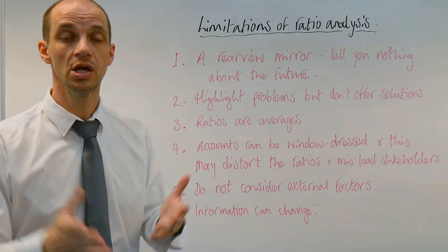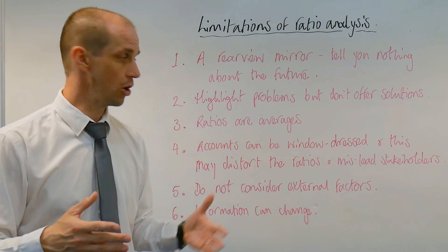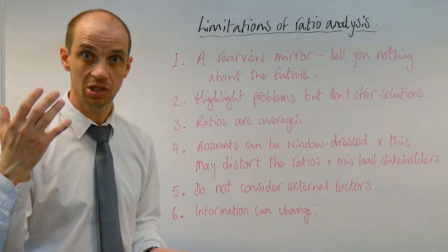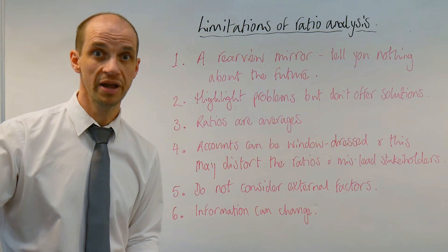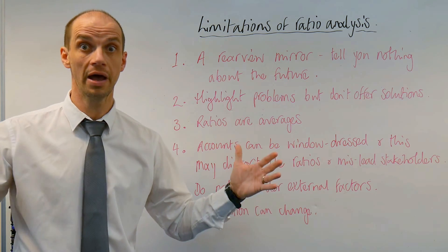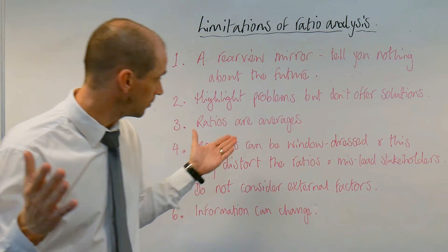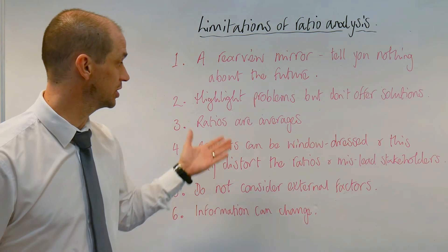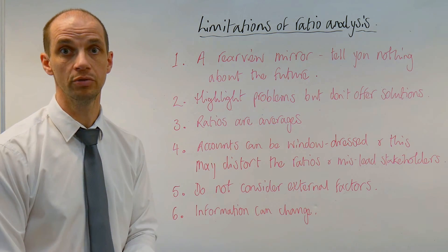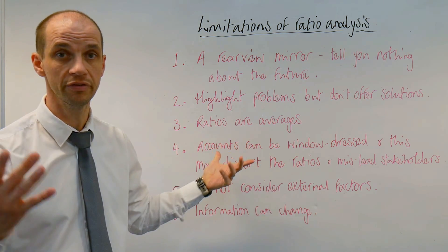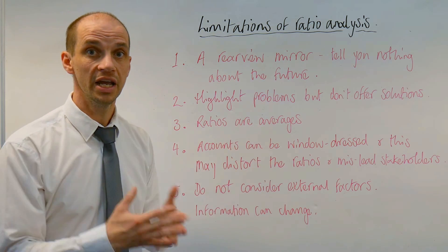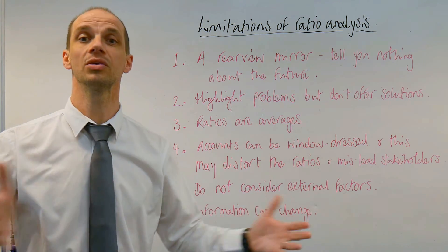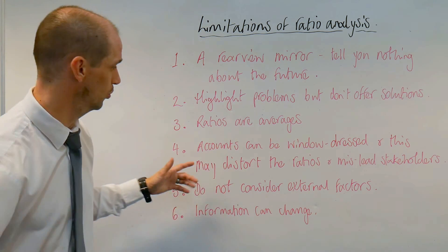Ratios are also averages, so they give you a good average performance indicator. When it comes to profitability, the actual profit margin obtained on different products will vary greatly, and ratio analysis just averages that out. For certain businesses, they can make very high profits on their high-ticket items — such as Apple, where the majority of their sales and profits come from iPhone sales. But with the iPhone averaged in, it may suggest that the Apple Watch is also highly profitable, when that's not necessarily the case — it's just an average across the product range.